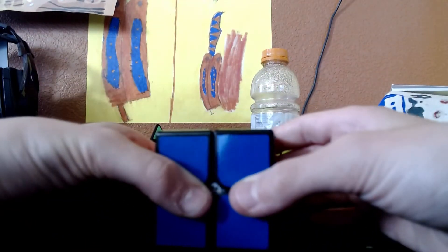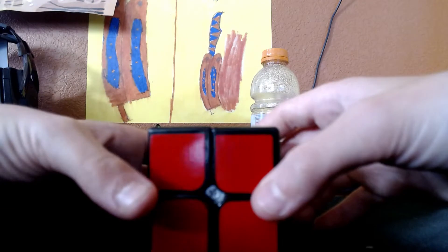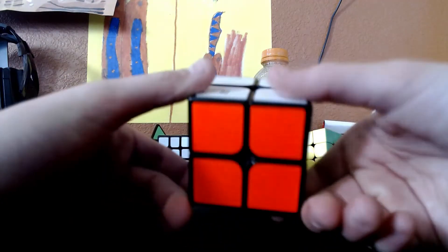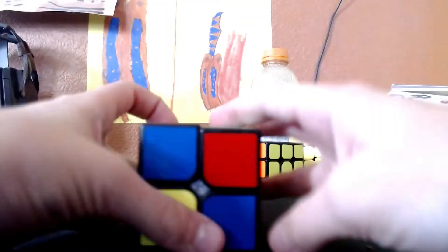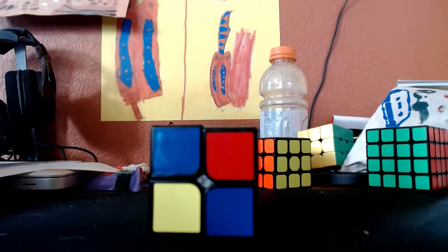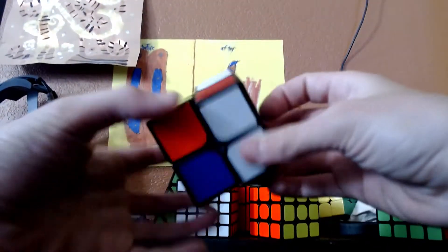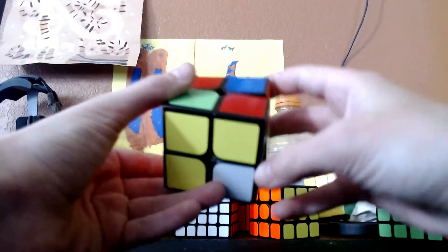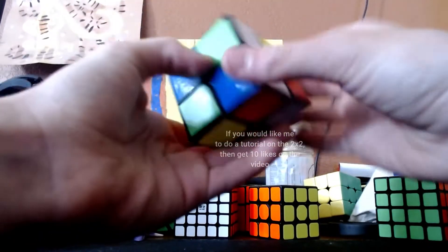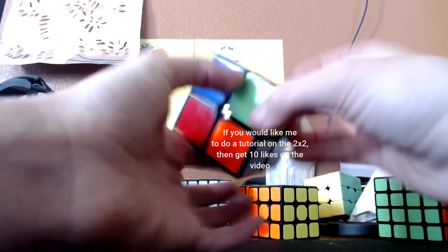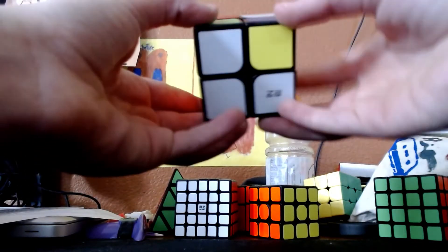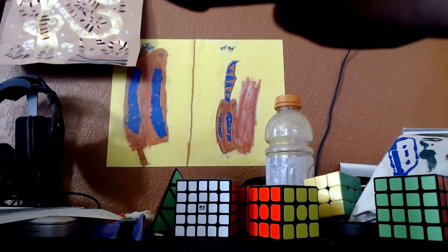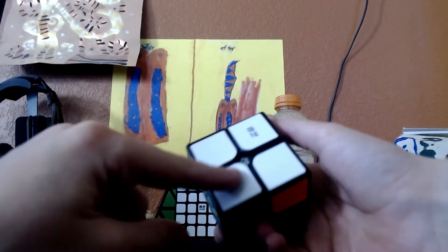First I have the two by two. I created my own method for solving this, I call it BTS or bottom top sides. So what I do is I solve the bottom.